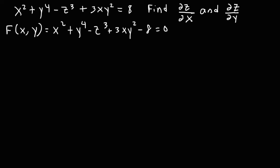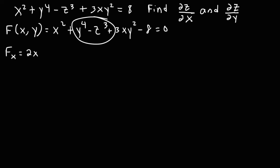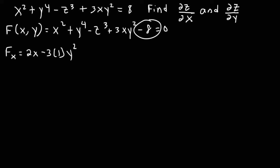Once you have this function, you want to find the partial derivative with respect to x. The derivative of x squared will be 2x. We're going to treat y as a constant, and the same is true for z, so that's going to become 0. This term has an x in it, so the derivative of x is 1. And the derivative of the constant negative 8 is 0. So f sub x is 2x plus 3y squared.